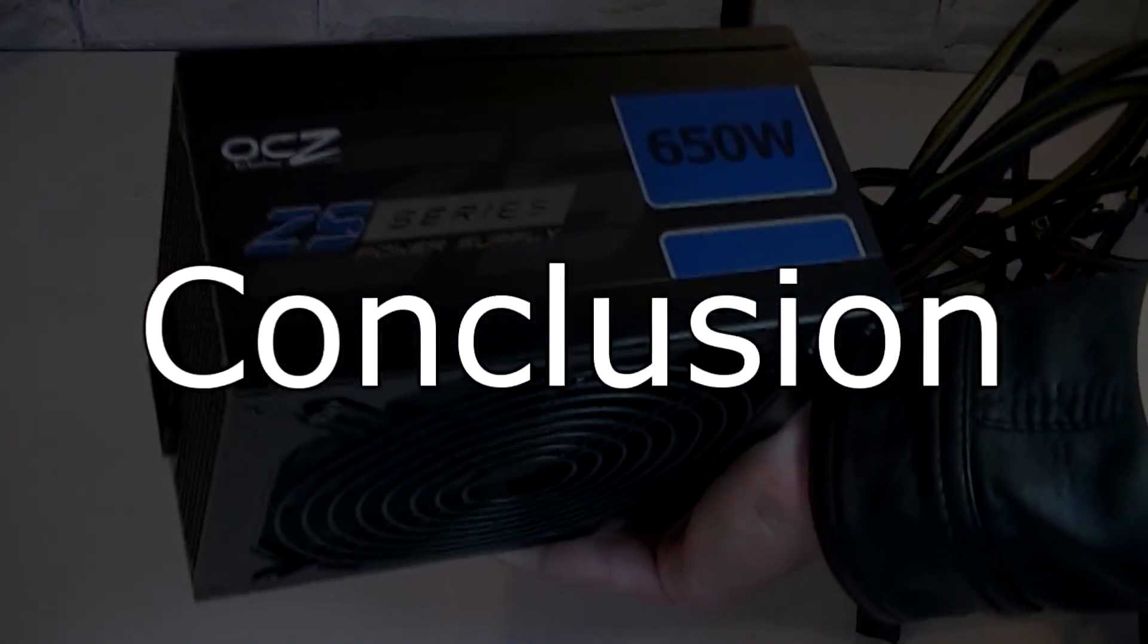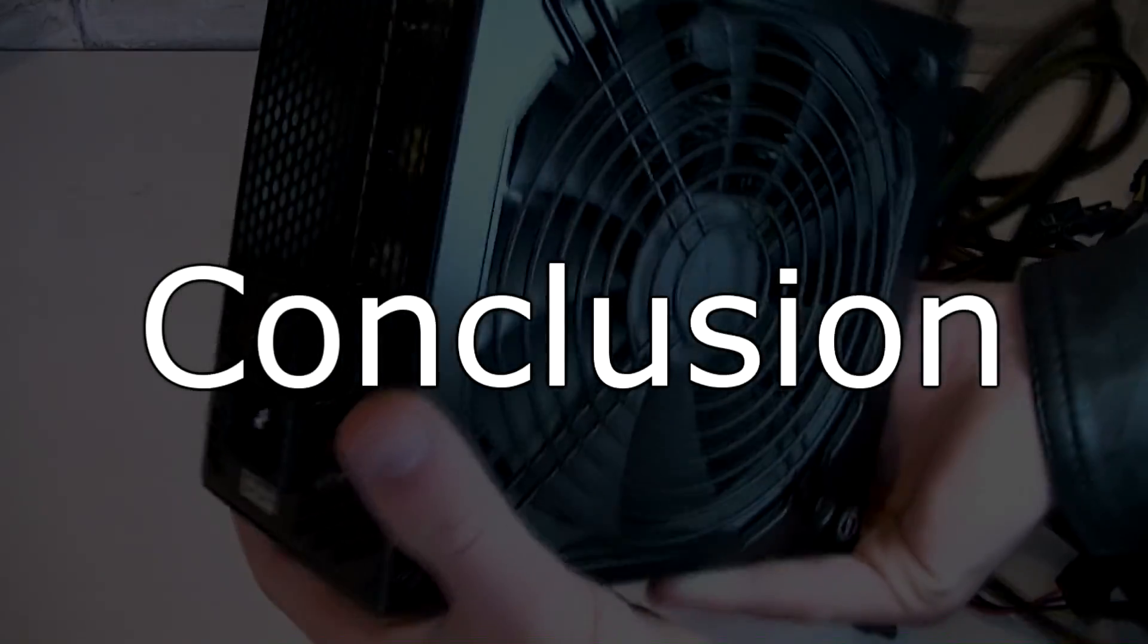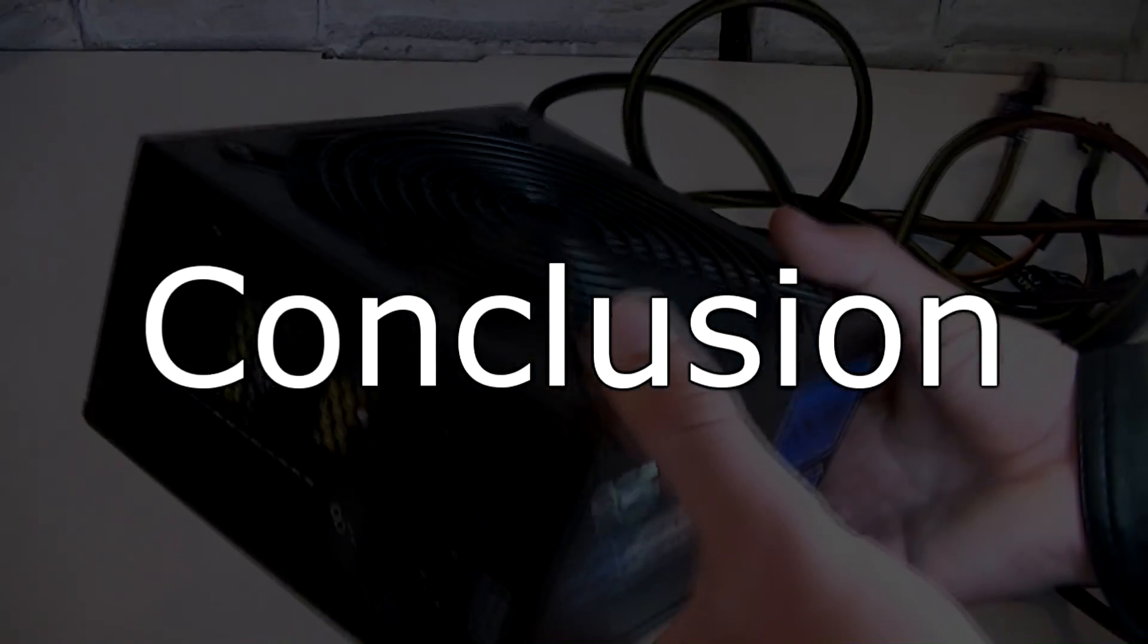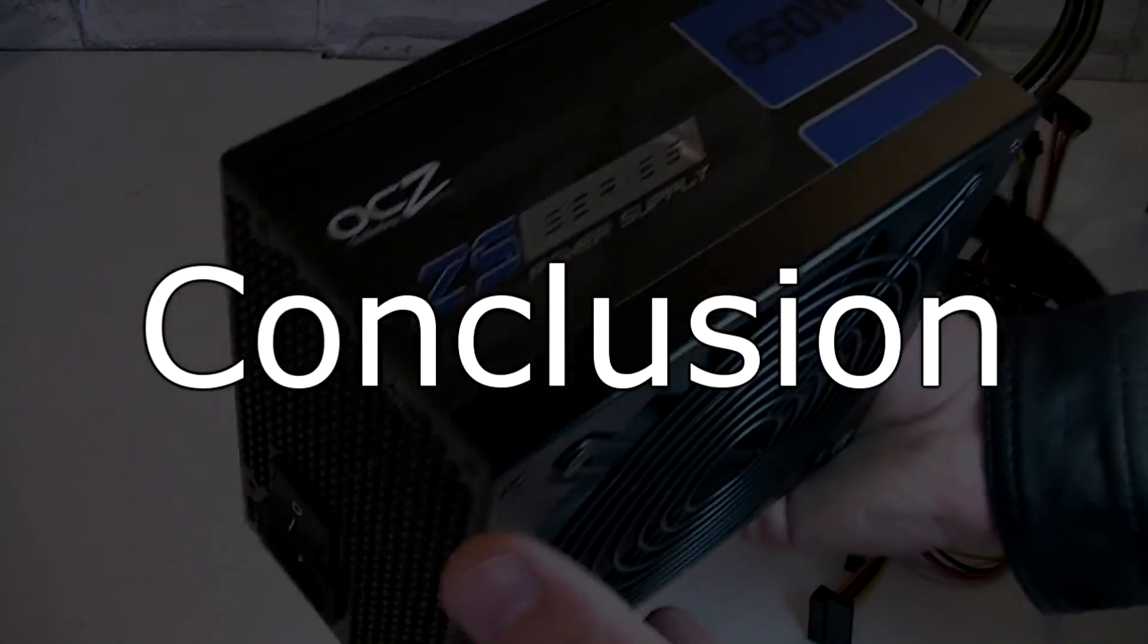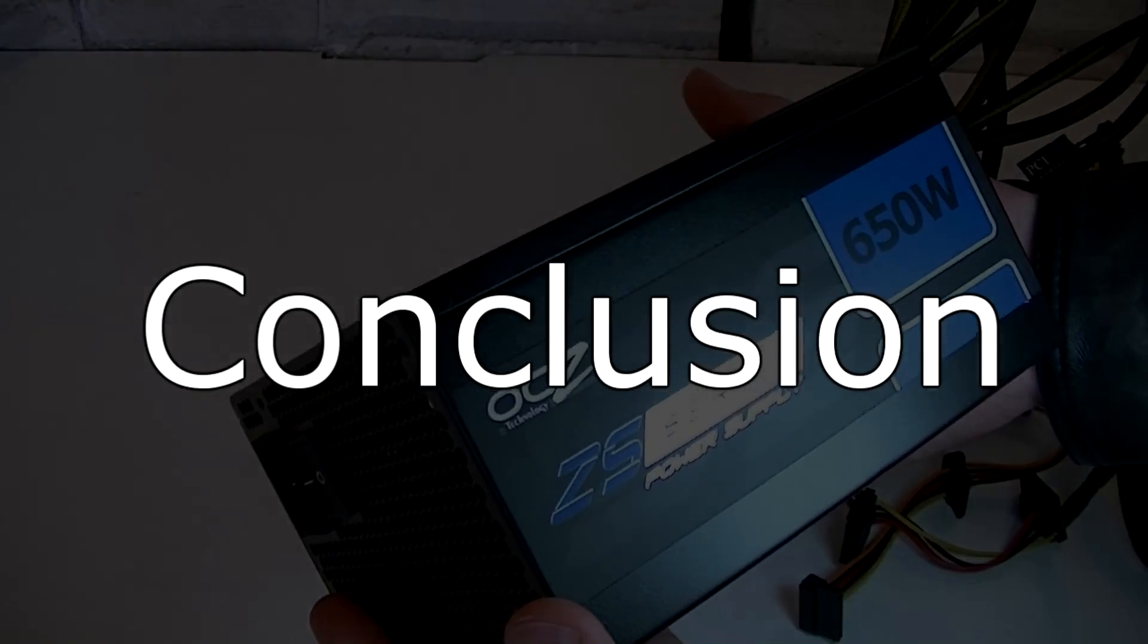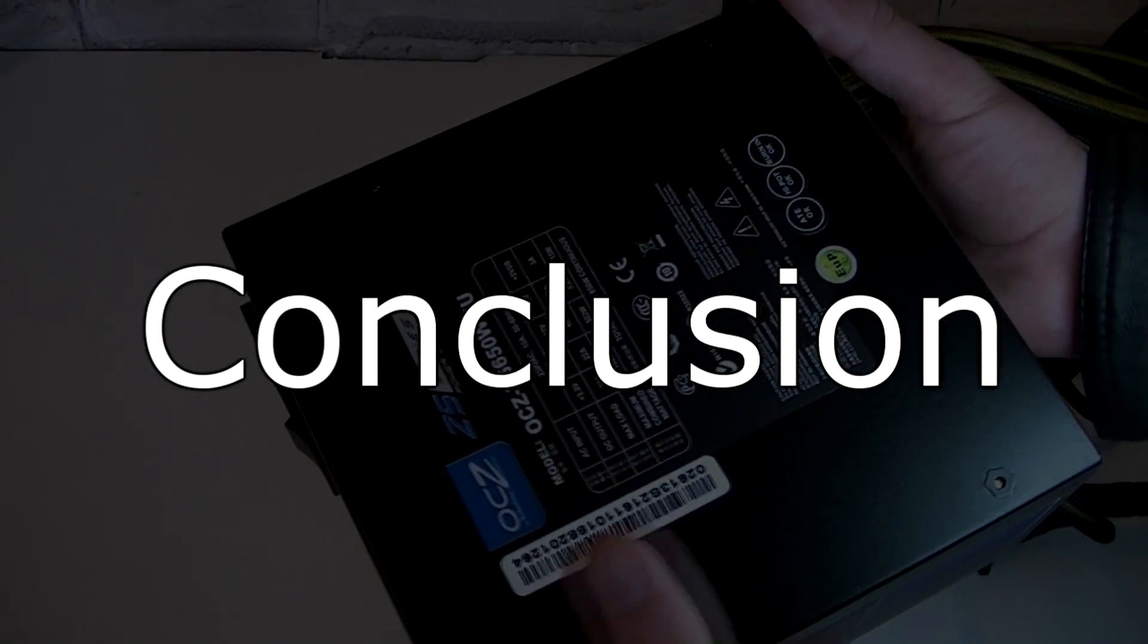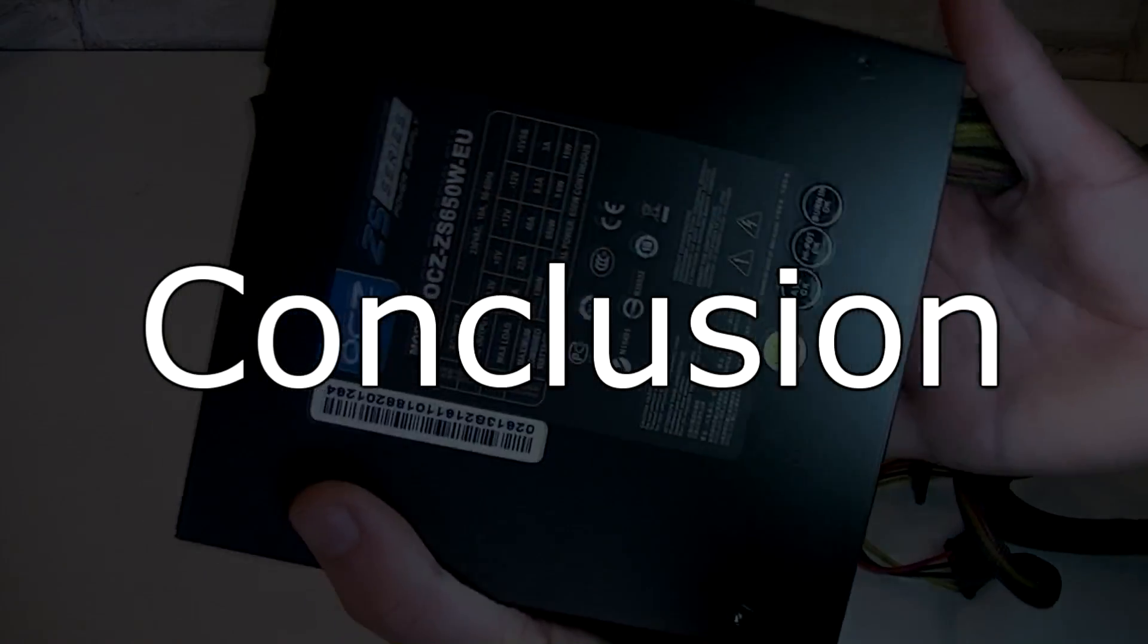The OCZ ZS series 650 watt power supply is a great choice if you're on a tight budget or don't want to spend a lot of money on a power supply. This unit will be able to power up a fairly decent system already but don't expect to be powering up high-end systems with multiple graphics cards for example. This will not happen. But for the average computer this would do it.